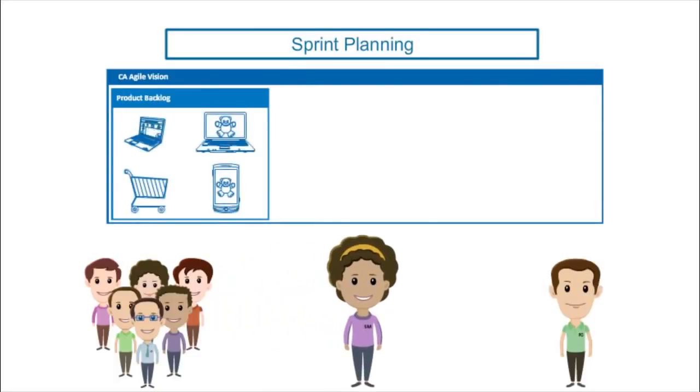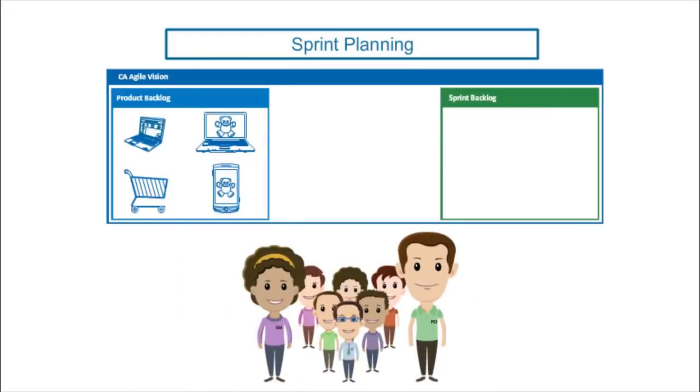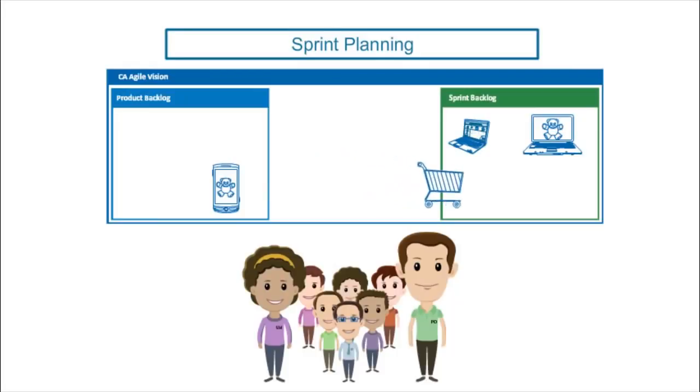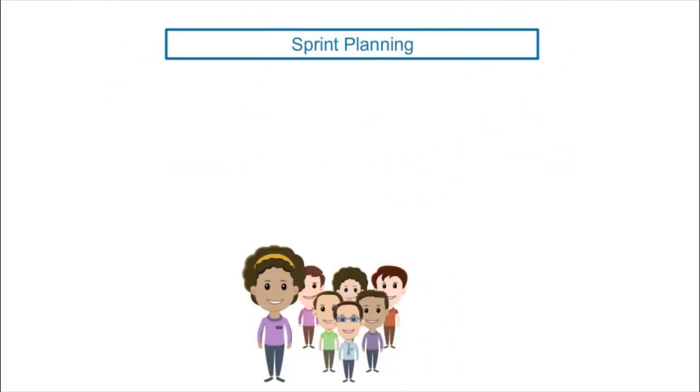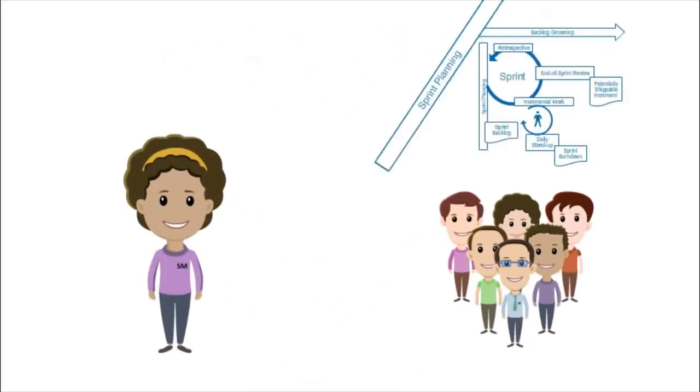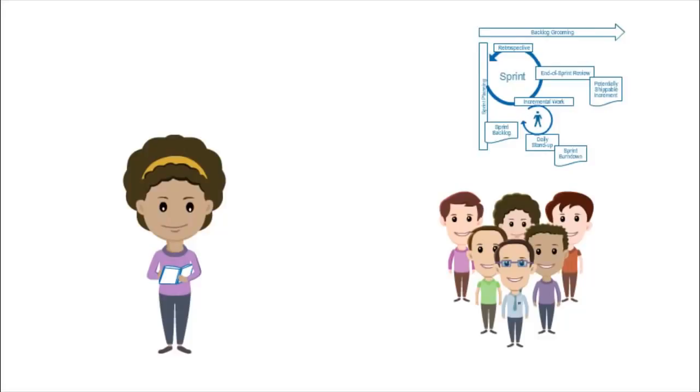They also size the stories in order to determine which stories will fit into the sprint. Tammy moves the highest priority stories to the sprint backlog, which defines the scope of sprint one. The team determines that they can work on four high priority stories: creating a website, developing description pages for Mary's most popular toys, creating a checkout page, and building a smartphone app for mobile purchases.